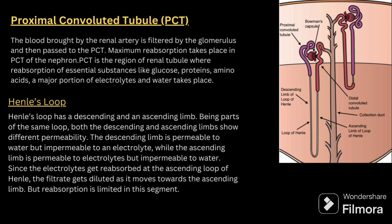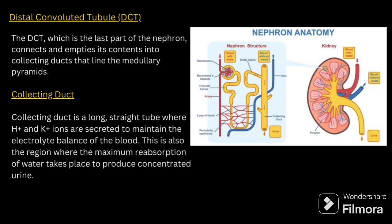In the proximal convoluted tubule, blood brought by the renal artery is filtered by the glomerulus and then passes to the PCT, where maximum reabsorption takes place. Essential substances like glucose, proteins, amino acids, a major portion of electrolytes, and water are reabsorbed here. In the loop of Henle, both ascending and descending limbs have different permeability: the descending limb is permeable to water but impermeable to electrolytes, whereas the ascending limb is permeable to electrolytes but impermeable to water.